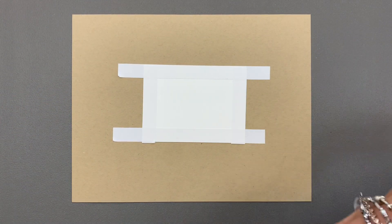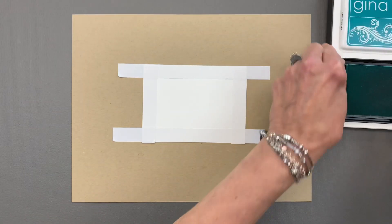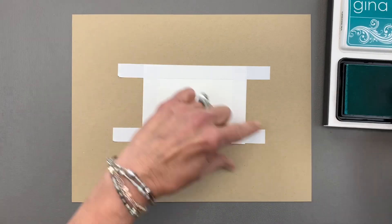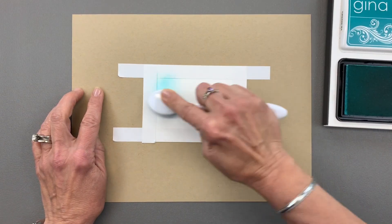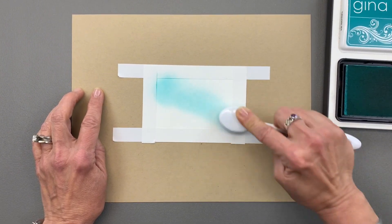I'm going to start with some Turquoise Sea ink and I'm going to ink this up on a diagonal going down the open space. I'm going to start up here in the corner and just work my way down in a diagonal.